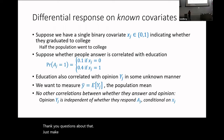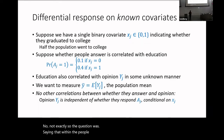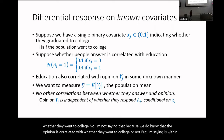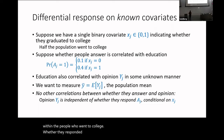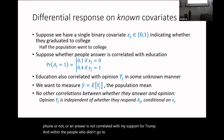To clarify: within the set of people who went to college, whether they respond is not correlated with their opinion. We know opinion is correlated with whether they went to college — but within the people who went to college, whether I pick up the phone is not correlated with my support for Trump. And within the people who didn't go to college, my support for Trump is not correlated with whether I pick up the phone.